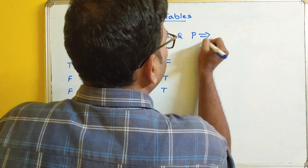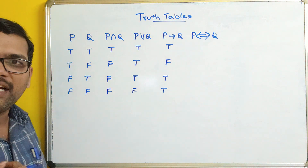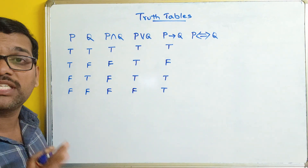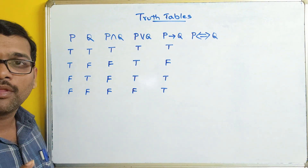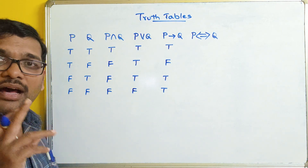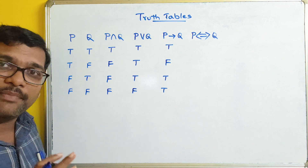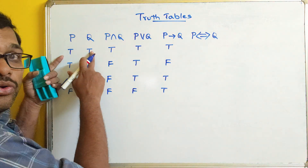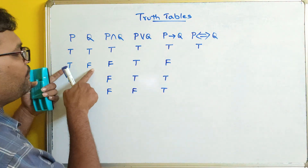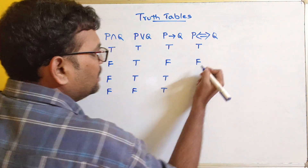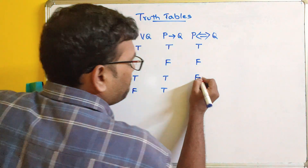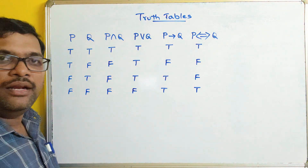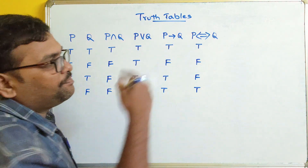Next, biconditional — also called double implies. If the truth value of both propositions are the same — whether both true or both false — then the result is true. So: true and true gives true; true and false — different — gives false; false and true — different — gives false; false and false — both same — gives true.